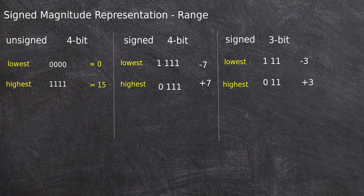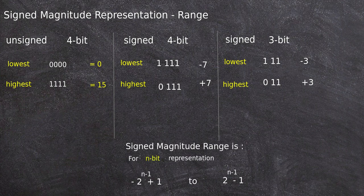If it is signed 3-bit representation, the lowest number is minus 3 — that is 1 for the sign bit and 11 for the magnitude — and the highest is plus 3. We can generalize this into a formula: for signed magnitude n-bit representation, the range becomes minus (2^(n-1) − 1) to plus (2^(n-1) − 1). Applying n=4 gives minus 7 to plus 7, and applying n=3 gives minus 3 to plus 3.